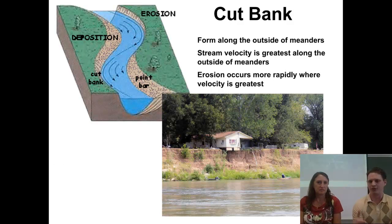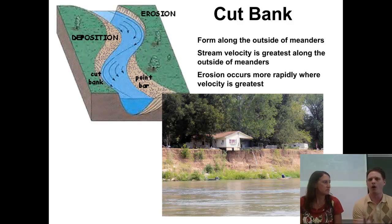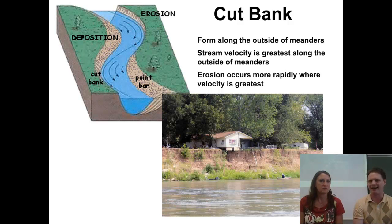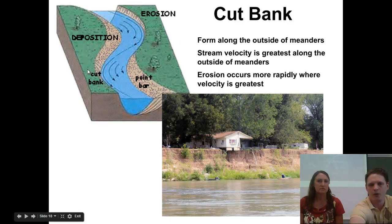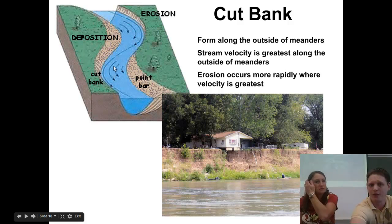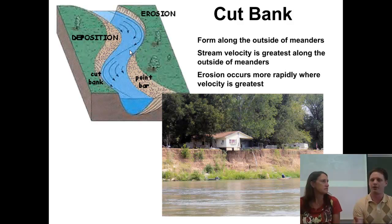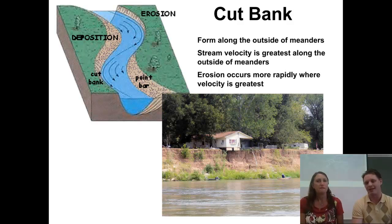Now we're getting back to the meander — these curves inside the river itself. If we talk about water flowing and going around a curve, the speed or velocity of the water is going to change. If we take a look at this area, we're going to call that the cut bank. If you notice the size of the arrows, they're telling us the speed of the water — the larger the arrow, the faster the water is moving. Water going around the outside of the curve at a faster rate is actually going to start taking sediment from that side of the river.